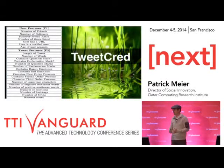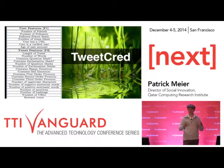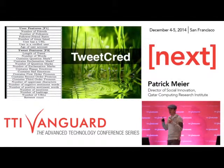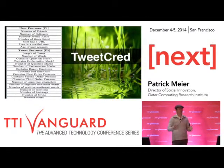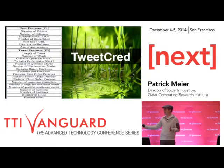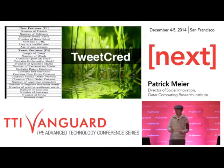We developed a plug-in on Chrome called TweetCred that allows you to automatically score the credibility of crisis-related tweets — not what you ate for breakfast, but crisis-related tweets. The training data are from disasters and crises. TweetCred scores the credibility of tweets on a 1 to 7 scale, with 7 stars meaning highly credible and 1 star meaning probably not credible. It's not a silver bullet by any means.